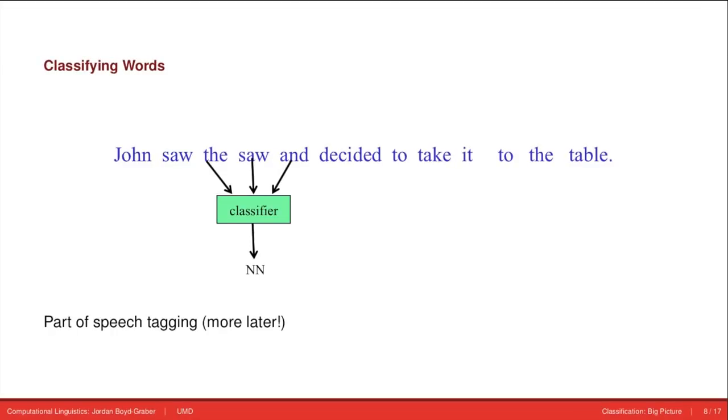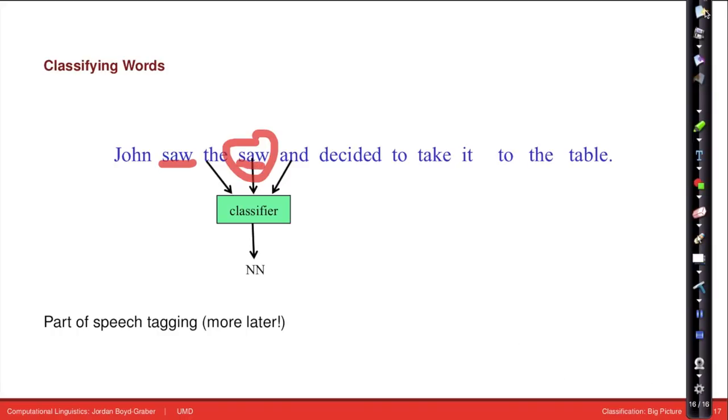Another form of classification we'll talk about is part of speech identification. Here you have a context like John saw the saw and decided to take it to the table. You need to decide what part of speech saw has. Saw can either be a verb or a noun. Here in this context, we'll call it a noun by looking at the words around it.